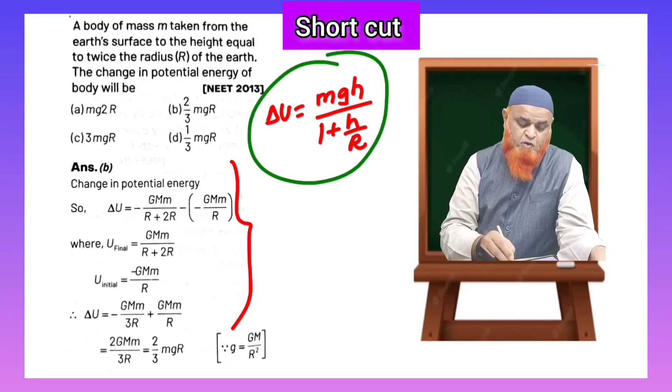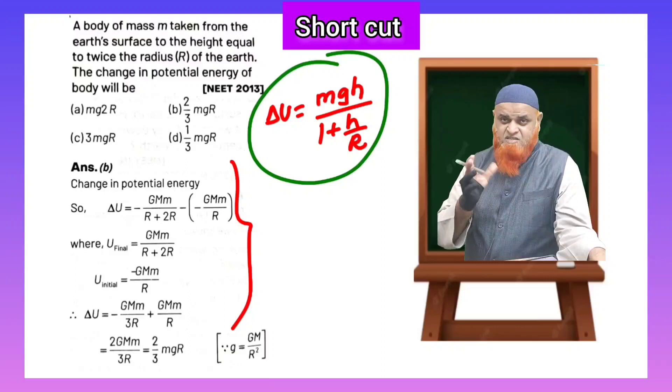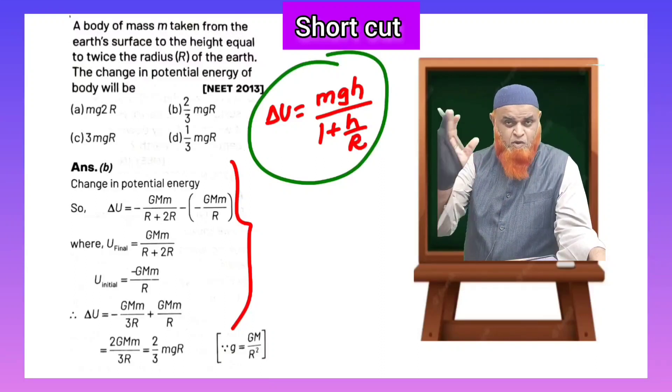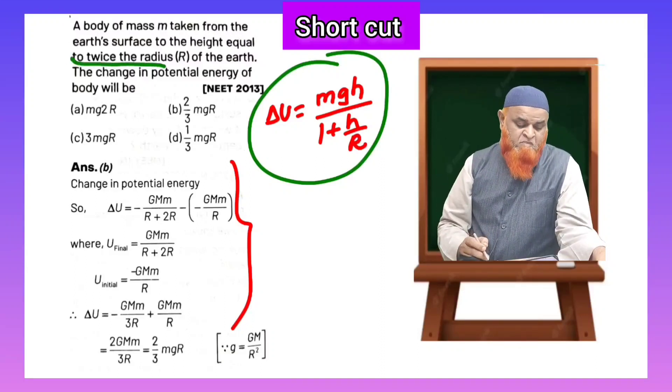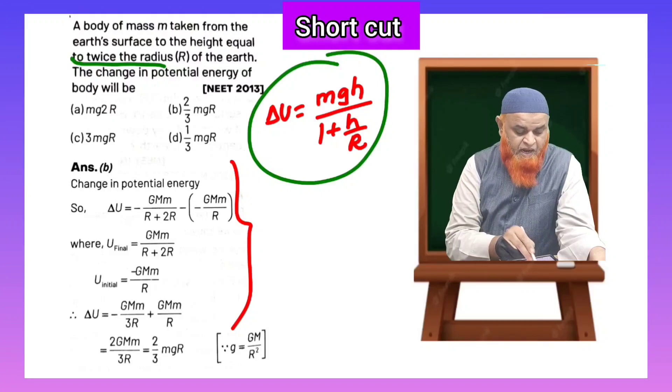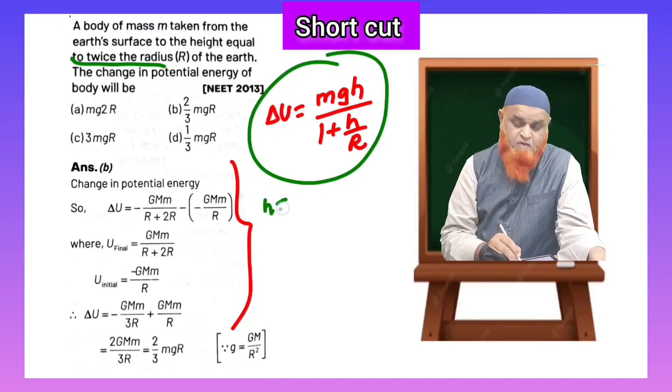So I have given you a shortcut formula here. Change in energy is taken as mgh by 1 plus h by r. And according to the problem here, height is going to be twice that of the radius.